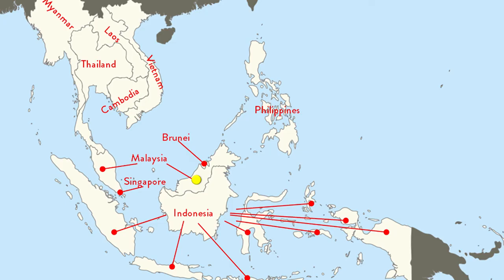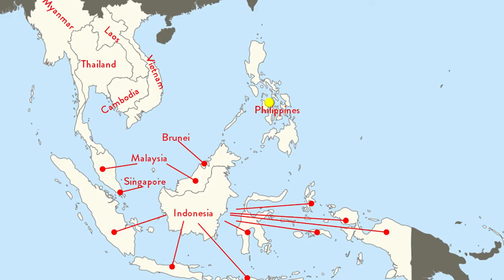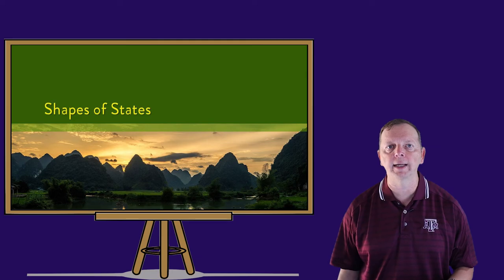Here we also find the small country of Brunei, but Brunei isn't the smallest country of Southeast Asia — Singapore is. Singapore is a small island country at the very southern tip of the Malay Peninsula. Then there is Indonesia, which is spread out in the south with over 17,500 islands. And to the east of Indonesia, we find the rest of Southeast Asia's islands belong to the Philippines, which itself has over 7,600 different islands.